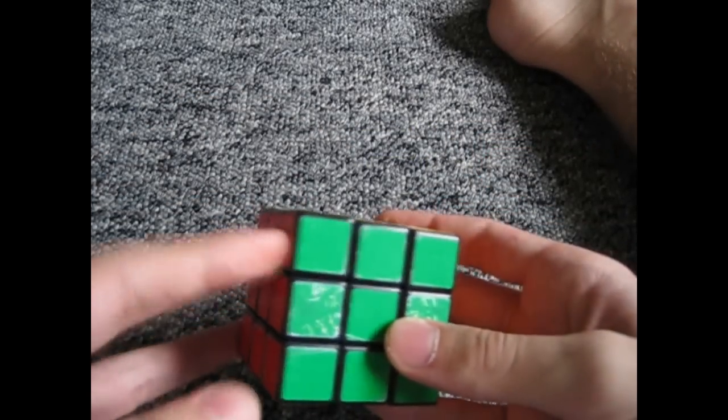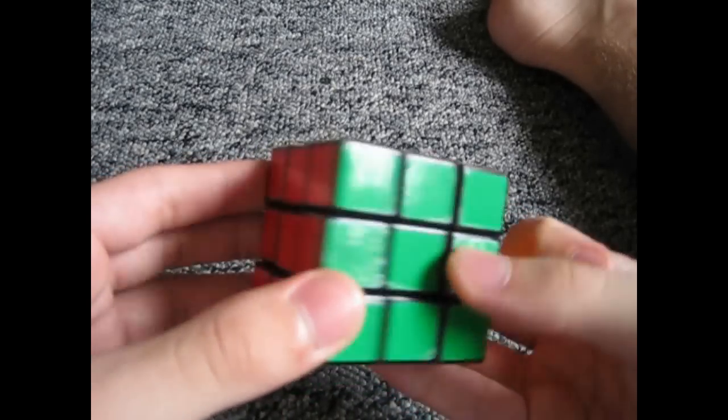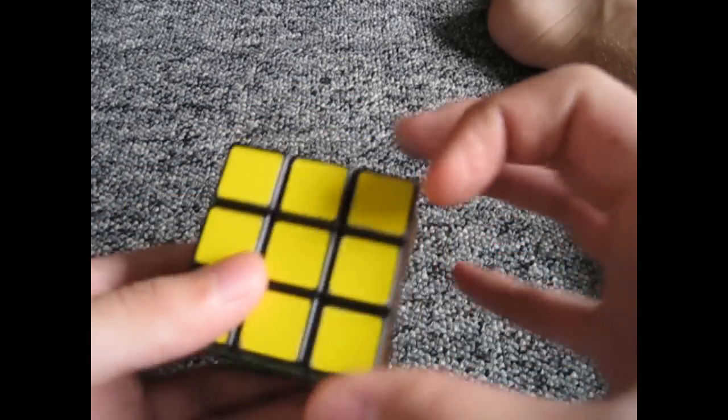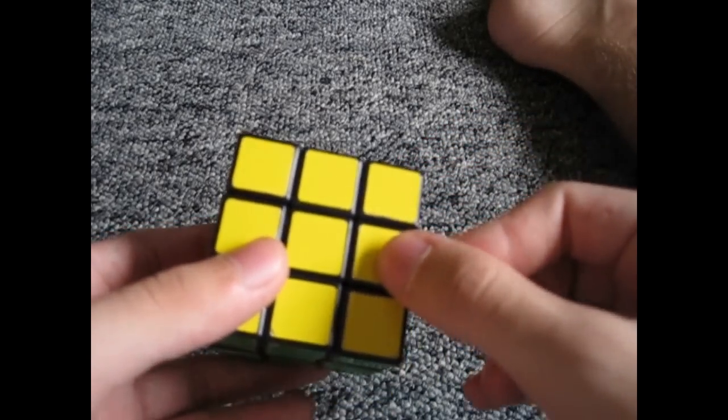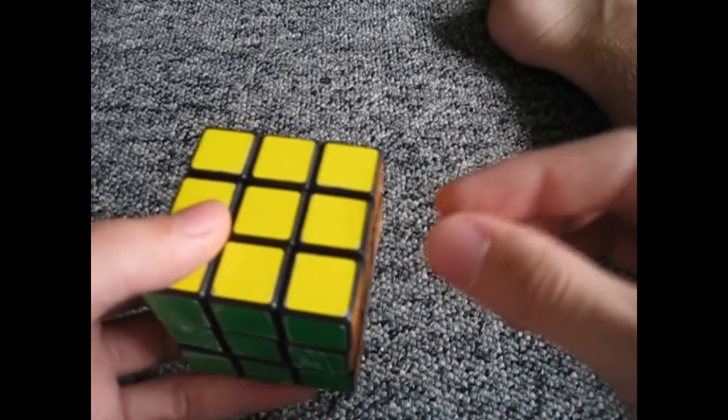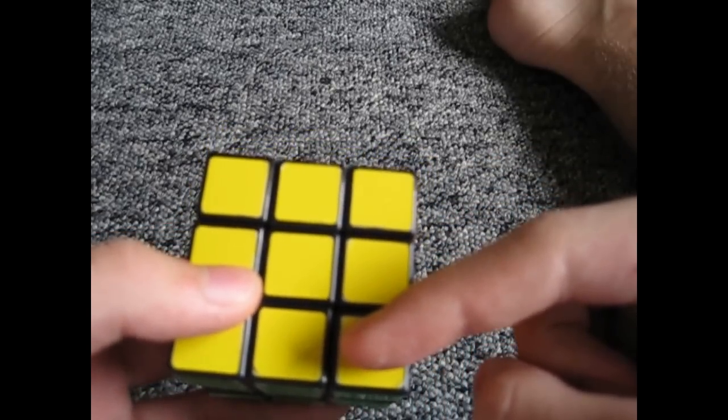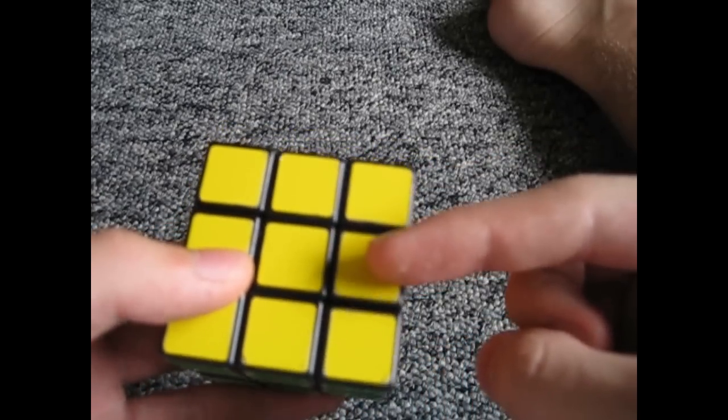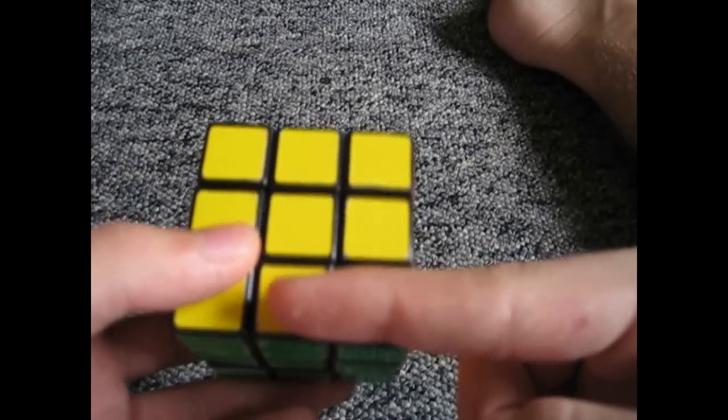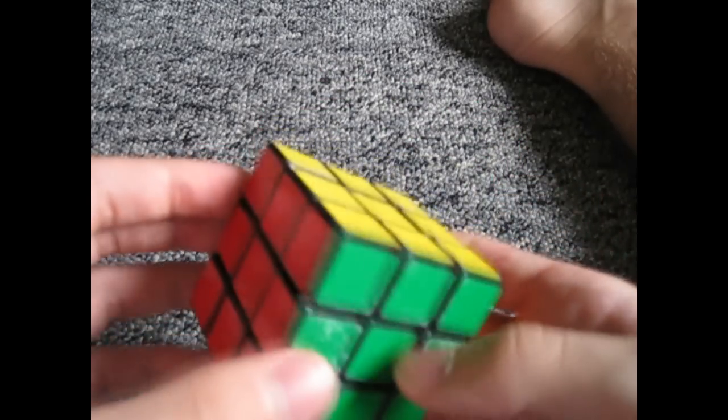So remember, any case that you know is a G-perm, make your headlights on the left. Then you search for where the 2x1 block is. If it's in the first slot, do G-perm 1. Here, G-perm 2. Here, G-perm 3. And here, G-perm 4. So it's very easy to recognize them.